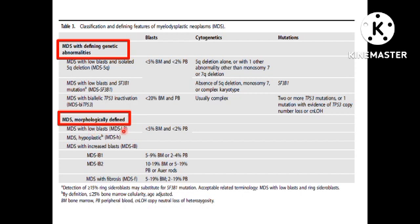MDS with low blast and MDS with increased blast are purely morphological categories. A new category, hypoplastic MDS, has also been included. Under MDS with defining genetic abnormalities, you have MDS with low blast and isolated 5Q deletion, because isolated 5Q deletion and SF3B1 mutation in MDS usually have a low blast percentage.